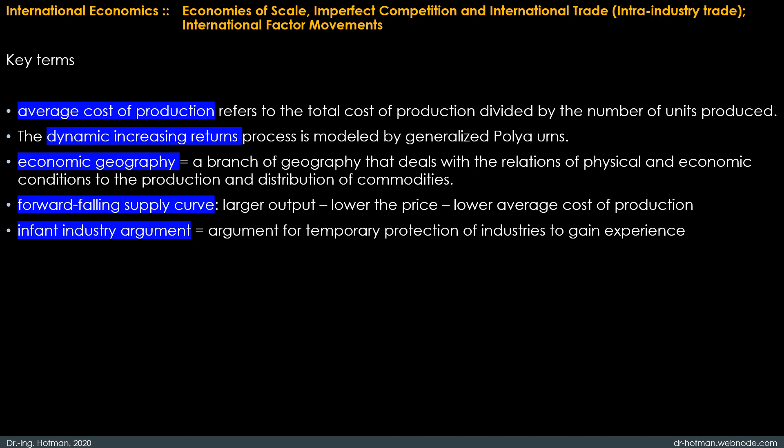The main objective of economic geography is to examine man's economic achievement in terms of production and consumption in the light of its environment. For example, location and climate have large effects on income levels and income growth through their effects on transport costs, disease burdens, and agricultural productivity, among other channels. Geography also seems to affect economic policy choices.